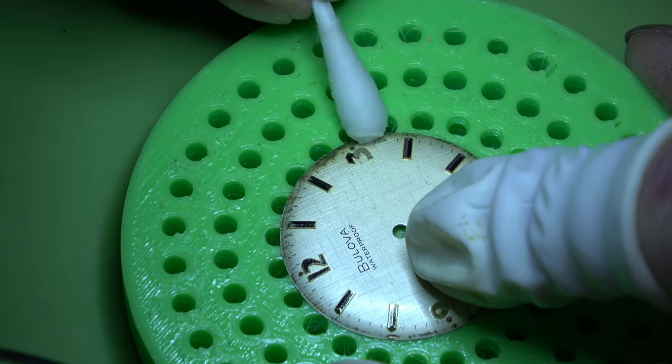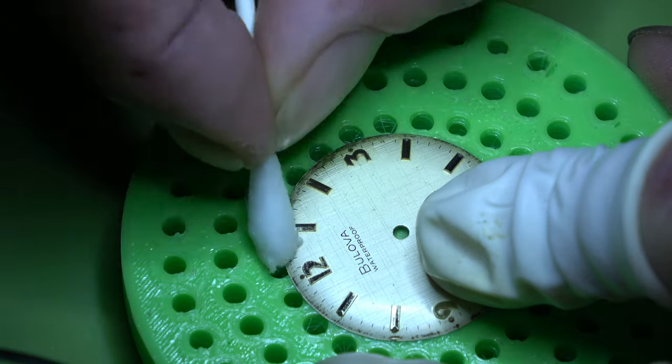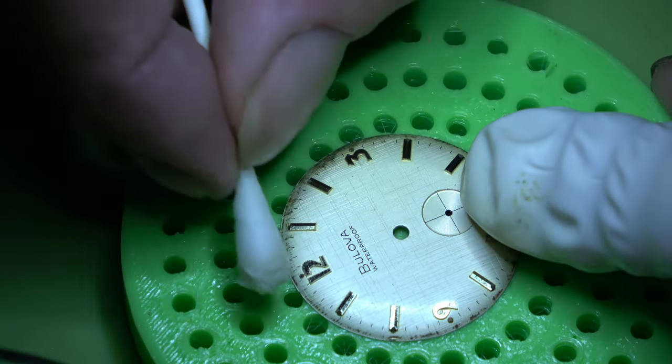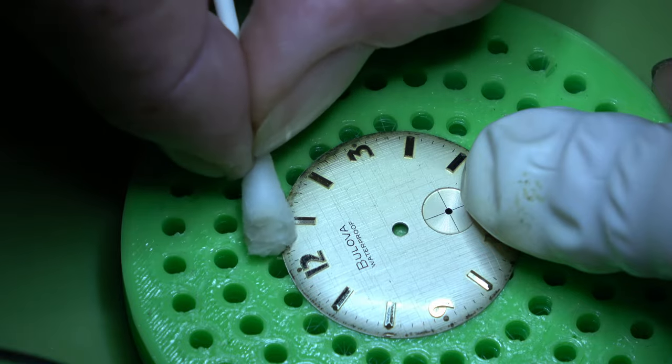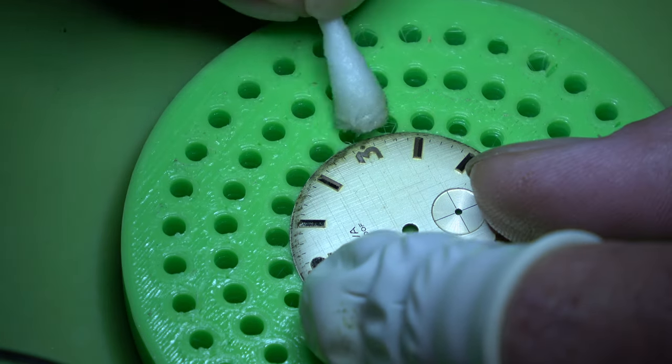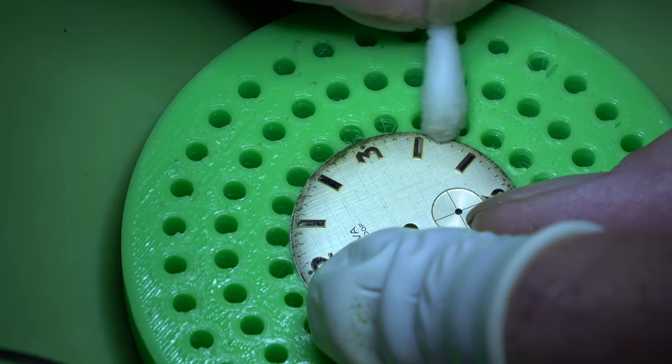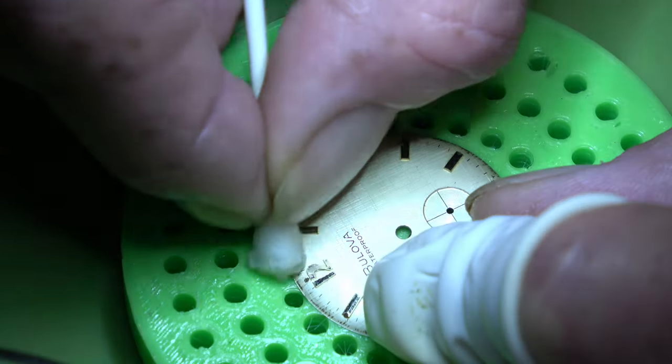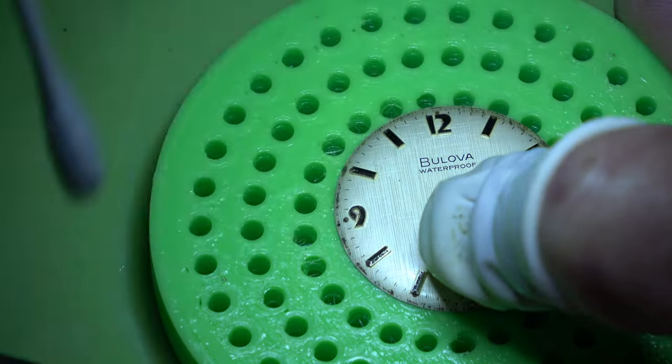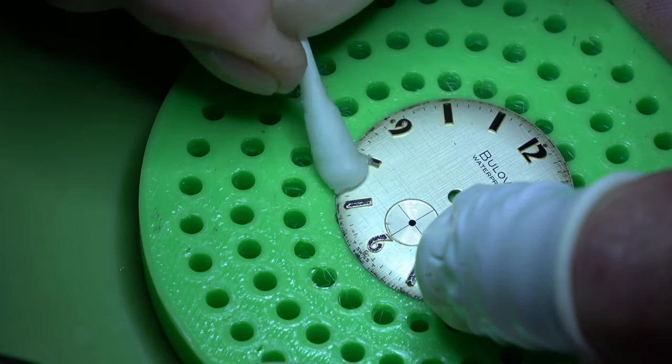But now let's move on to the dial. Like I said there's not a great deal you can do with dials. You're in the risk of doing more damage than good. But on this one I think we're a bit safe to use some water, a little cotton bud. We'll try and get off what we can. The majority of the damage is around at 3 o'clock where the winding stem was. It's migration of the grease and dirt from that.